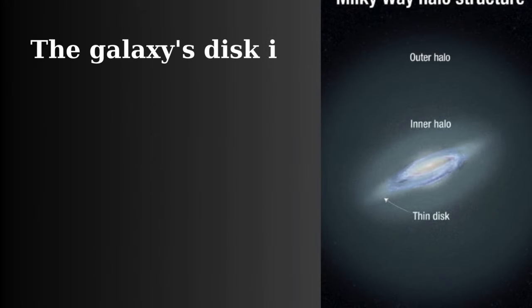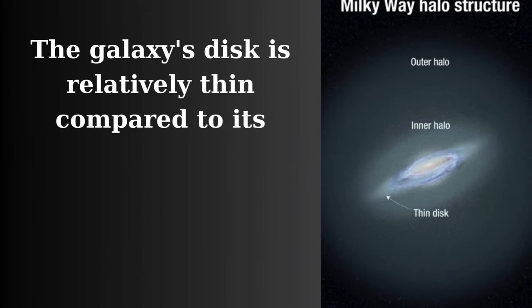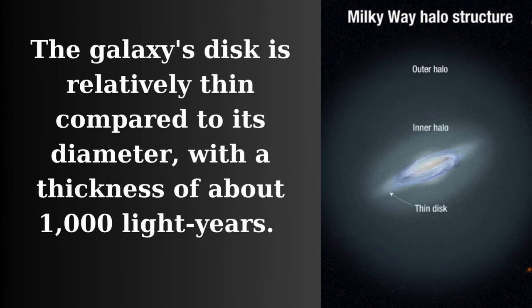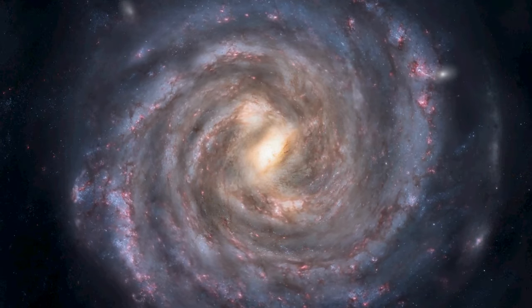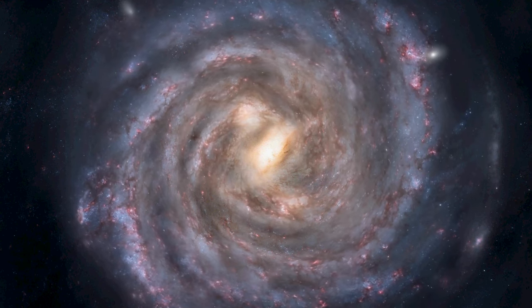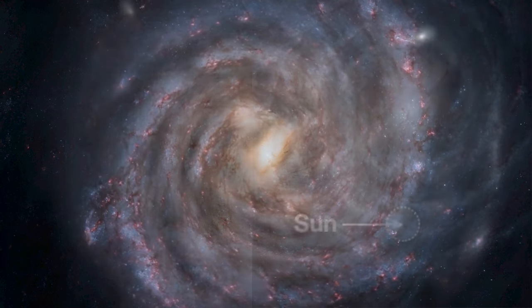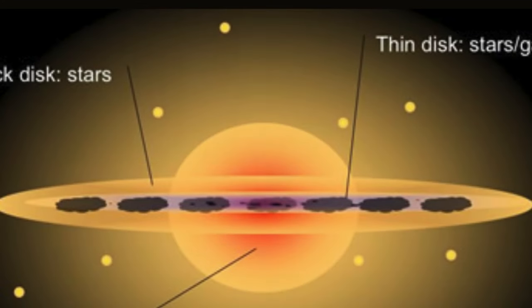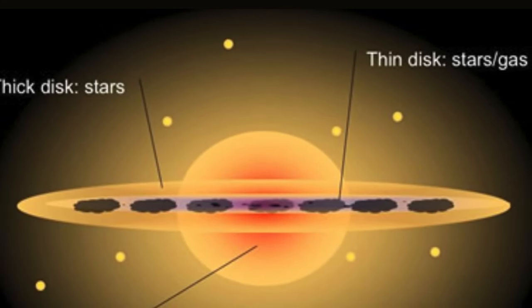The galaxy's disk is relatively thin compared to its diameter, with a thickness of about 1,000 light years. However, the thin disk, where most of the galaxy's stars are found, including our Sun, is about 300 light years thick. The thicker disk, containing older stars, has a larger vertical dispersion.